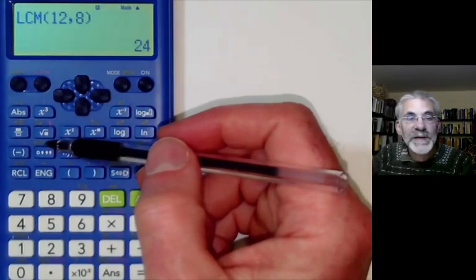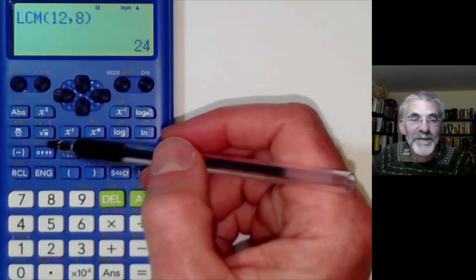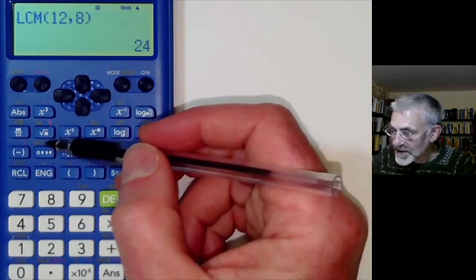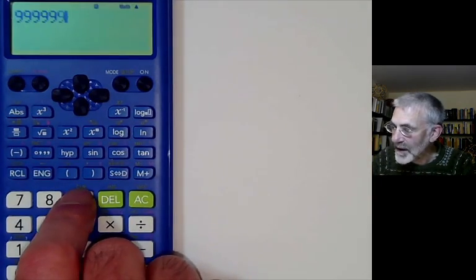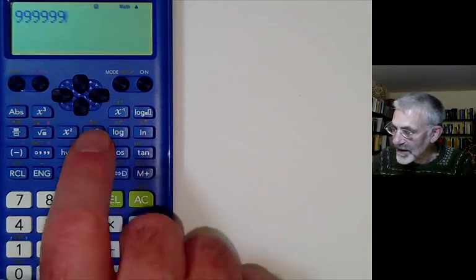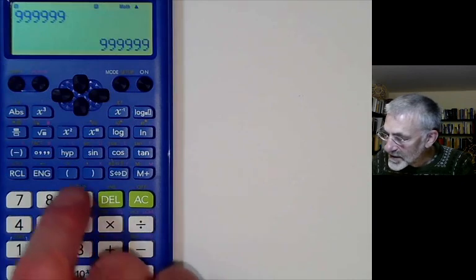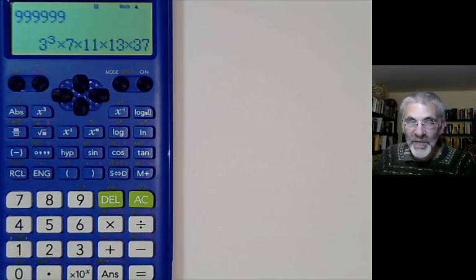Another one I noticed is this button says FACT. I originally assumed this meant factorial, but the factorial is actually up here, and FACT turns out to mean factorise. For example, if I enter 999999 and factorise it, it tells me the prime factorisation of this number.